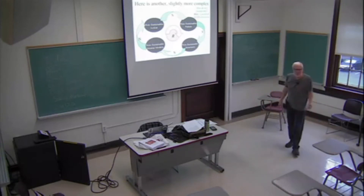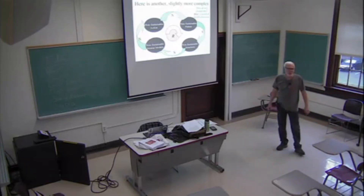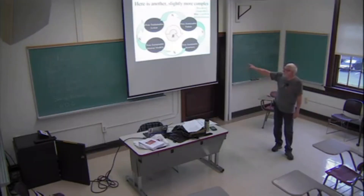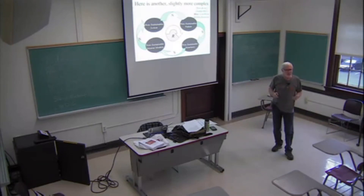How do you change this? The hint in systems thinking is that the system works in both directions. Not only do non-sustainable actions increase non-sustainable patterns — it is also true that as non-sustainable actions decrease, non-sustainable patterns decrease, non-sustainable structures decrease, and non-sustainable ways of thinking decrease. The model works in both directions and suggests a place to intervene to change the world one action at a time.